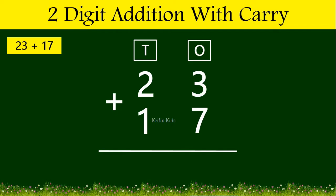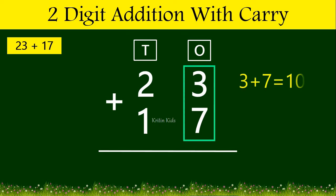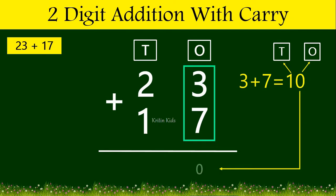Now let's add numbers at the ones position, that is 3 plus 7. 3 plus 7 gives us 10. Here, 0 is on the ones position and 1 is on the tens position. So let's write first the ones position, that is 0. Now on the tens position we have 1.